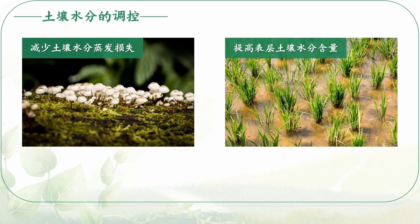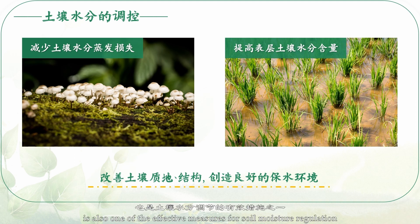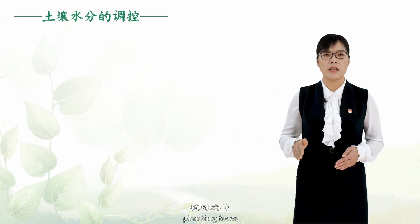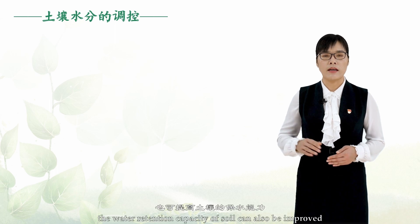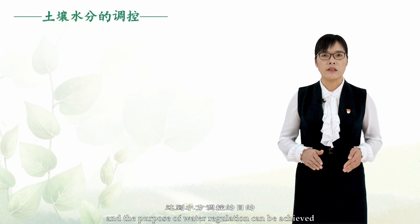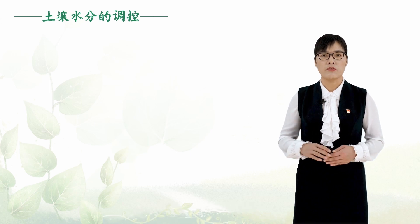8. Improving soil texture and structure to create a good water-retaining environment is also one of the effective measures of soil moisture regulation. By increasing the application of organic fertilizer, planting trees, fertilizing, and planting grass, the water retention capacity of soil can also be improved, and the purpose of water regulation can be achieved.